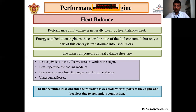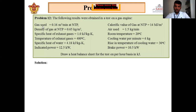This is the theory of the heat balance sheet. We will now solve a numerical problem to understand more clearly how the heat balance sheet can be prepared. The following results were obtained during a test of a gas engine: gas used is 0.16 cubic meters per minute, calorific value of fuel is given in megajoules per cubic meter, and density of gas is given.